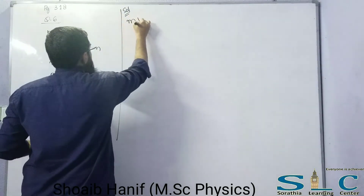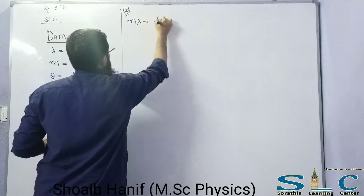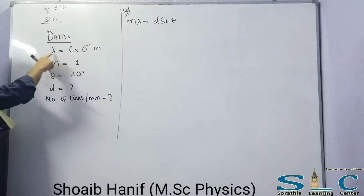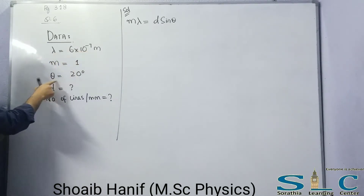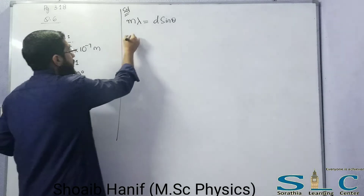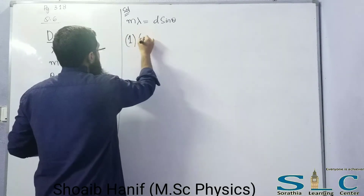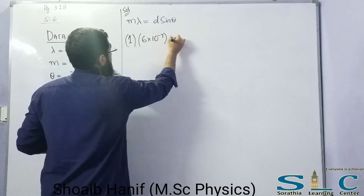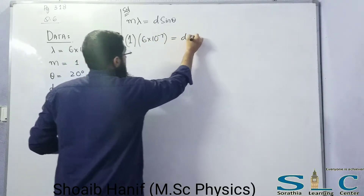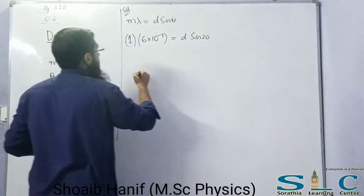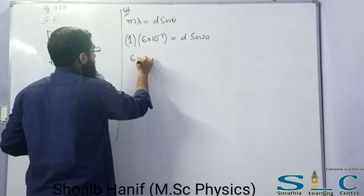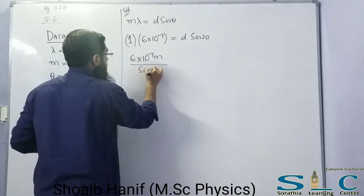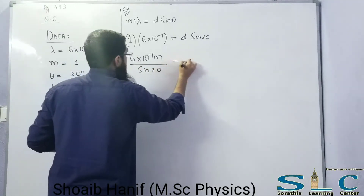The formula is: m·λ = D·sinθ. Substituting m = 1, λ = 6×10⁻⁷, and θ = 20 degrees, we place the values: 1 × 6×10⁻⁷ = D·sin20°.